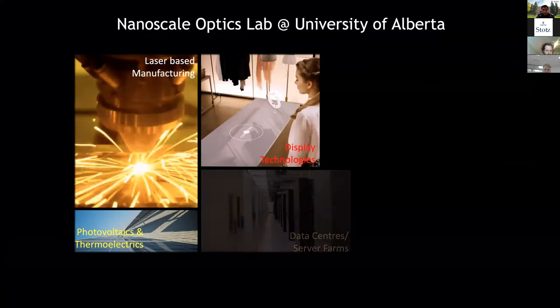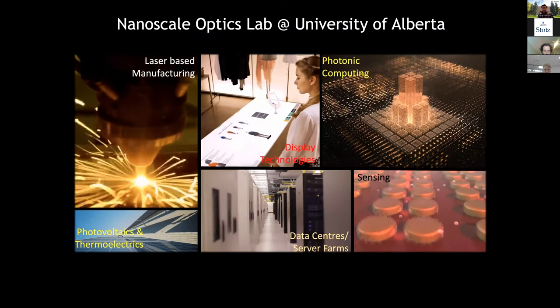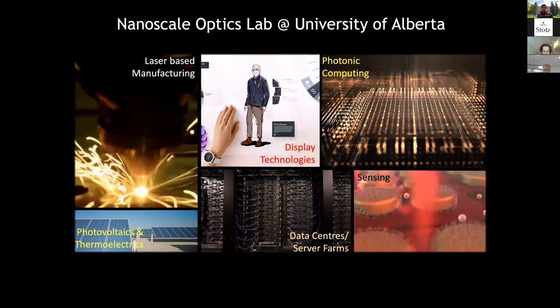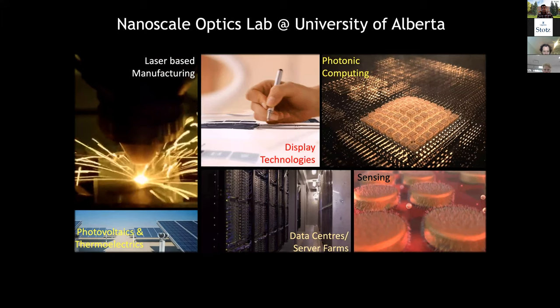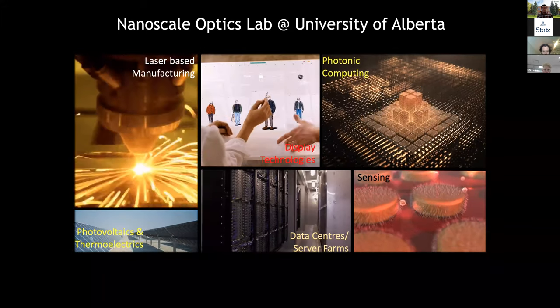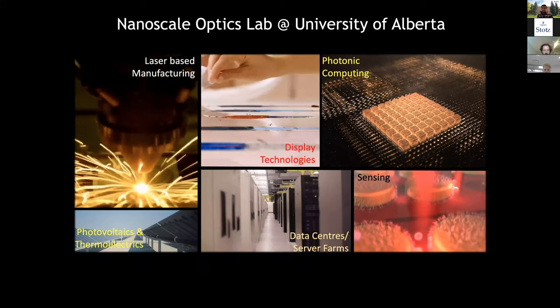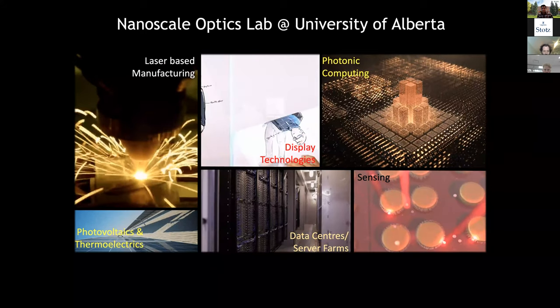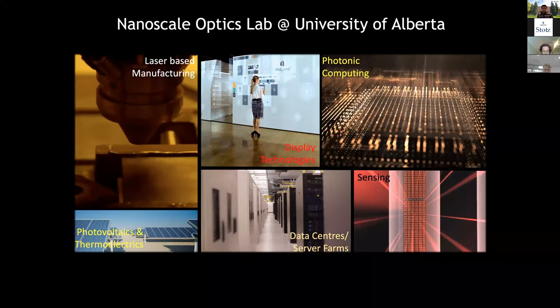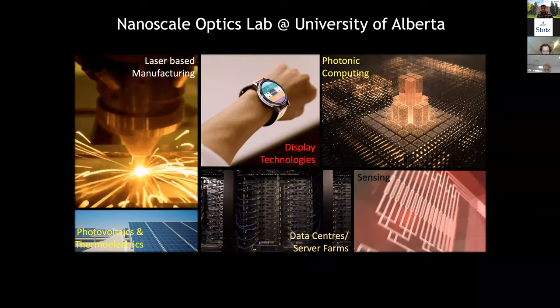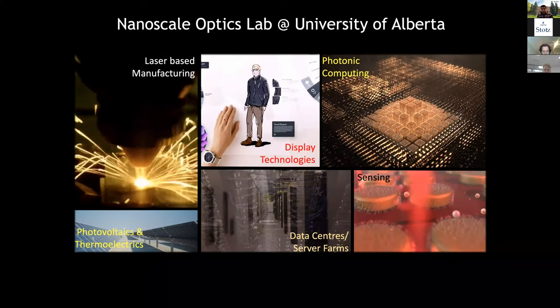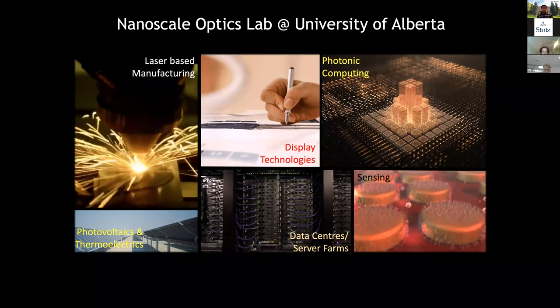Some of the things we do in my lab include developing a variety of different devices, manufacturing methods, and processes with a variety of different applications. The main markets we target at the Nanoscale Optics Lab are things like laser-based manufacturing, photovoltaics and thermoelectrics. We have a big interest in improving the efficiency of energy devices. We've also got a huge interest in making nanophotonic devices for display technologies, telecommunication and data centers, and photonic computing.